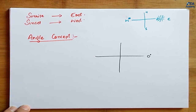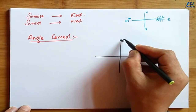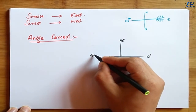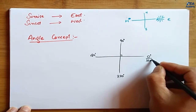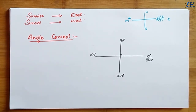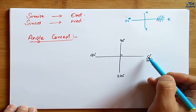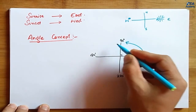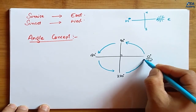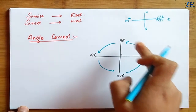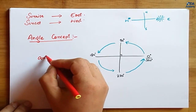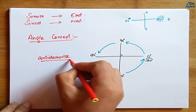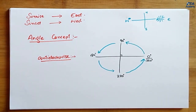Starting from 0 degrees, going around, we get 90 degrees here — because this is perpendicular — then 180 degrees, then 270 degrees, and then 360 degrees. I placed 0 on the right side and 180 on the left side. The direction of angle measurement going from right towards left in a circular path is called the anti-clockwise direction — opposite to how a clock moves.